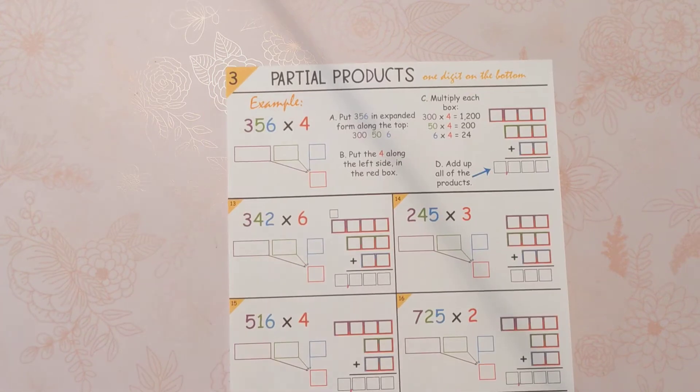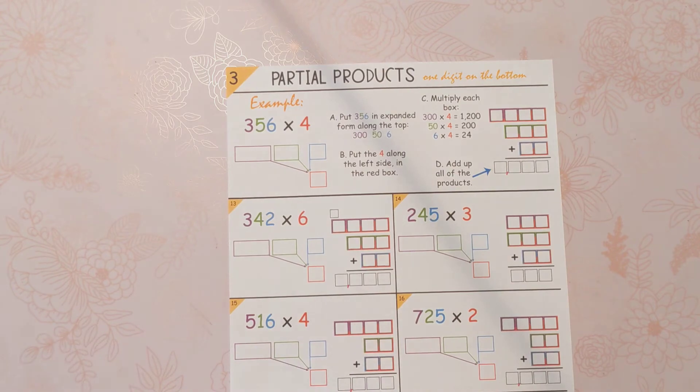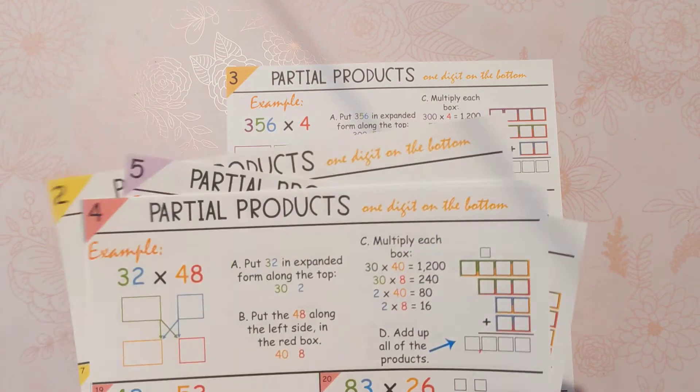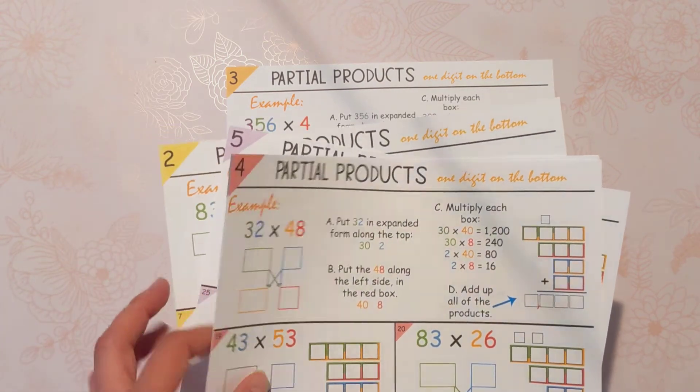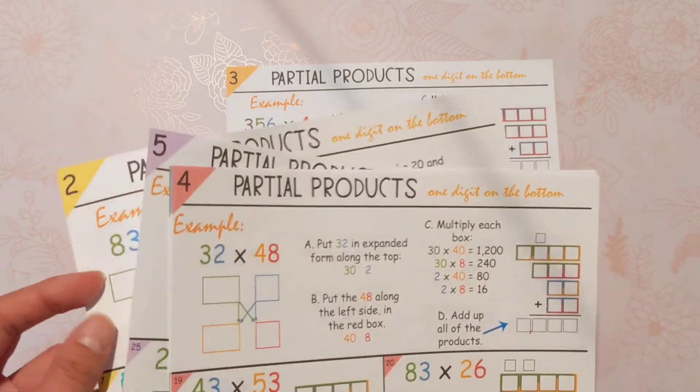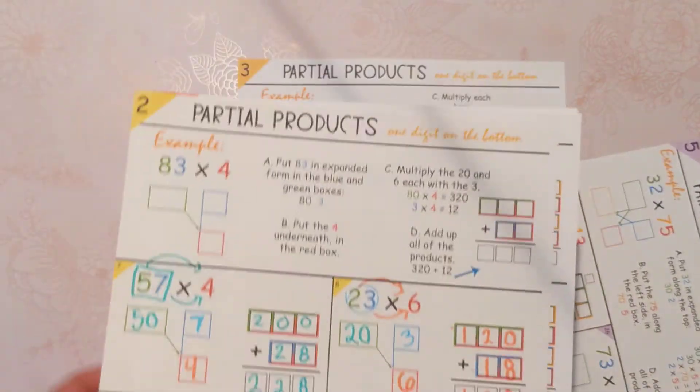Hello, today we are doing partial products. We're going to be doing three digits times one digit. Feel free to click on the description if you want to get the rest of these, and we do different difficulty levels.